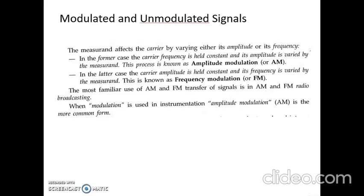Sometimes the quantity to be measured may be a pure analog electrical signal. In order to transmit the signal, it is sometimes required to modulate the input analog signal — that is, the signal may be mixed with a high or low frequency carrier. In amplitude modulation (AM), the carrier frequency is held constant and its amplitude is varied by the measurand. In frequency modulation (FM), the carrier amplitude is held constant and its frequency is varied by the measurand.